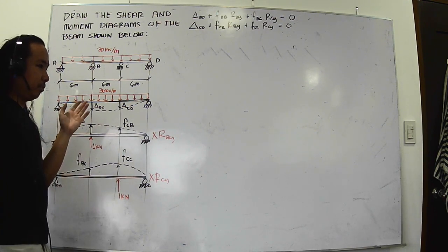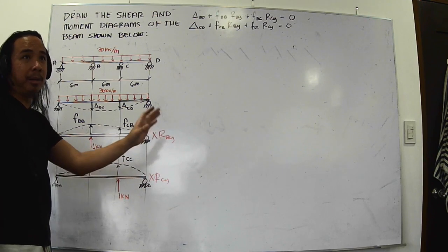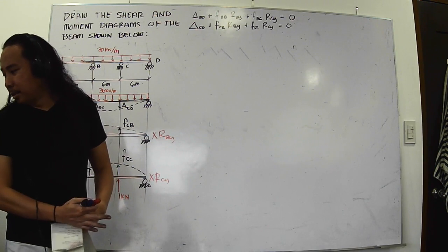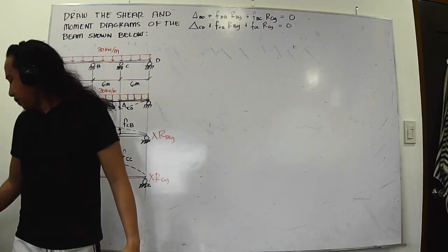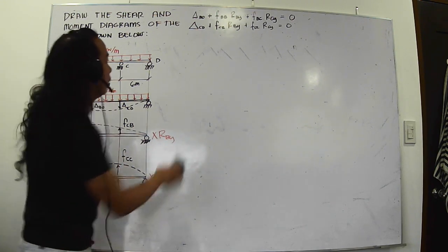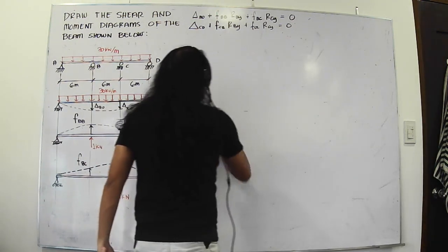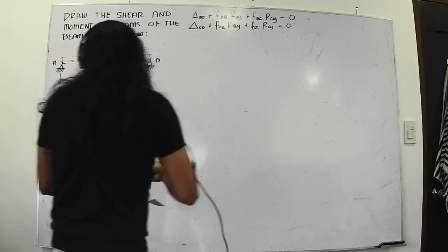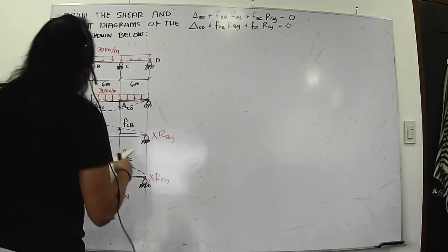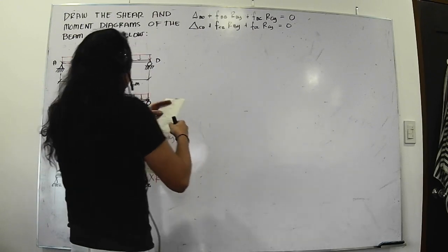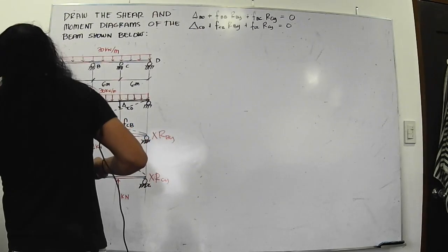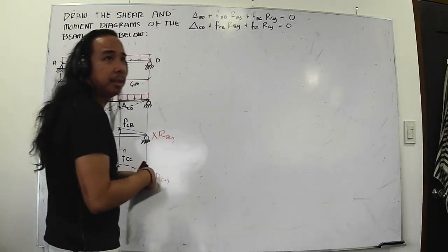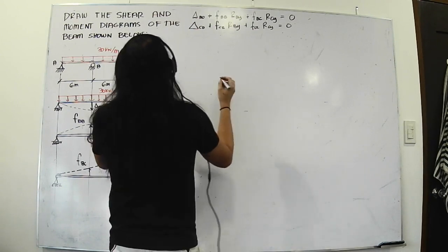Why not use just one solution? One time, big time — get all of them at once. Let's try direct integration. It's tedious with all the algebra, but at least the formula is reusable. We already practiced conjugate beam, so let's do direct integration instead.